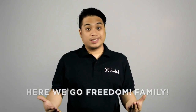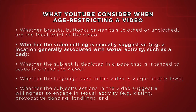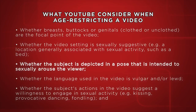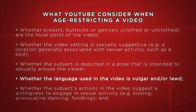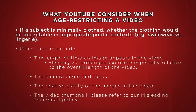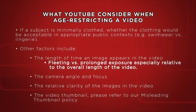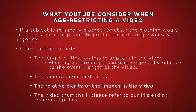These are the things that YouTube considers when a video should be age restricted. Whether breasts, buttocks, or genitals, clothed or unclothed, are the focal point of the video. Whether the video setting is sexually suggestive — for example, a location generally associated with sexual activities such as a bed. Whether the subject is depicted in a pose intended to sexually arouse the viewer. When the language used in a video is vulgar or lewd. Whether the subject's actions suggest a willingness to engage in sexual activity — for example, kissing, provocation, dancing, or fondling. If a subject is minimally clothed, whether the clothing would be acceptable in appropriate public contexts, such as swimwear versus lingerie. Other factors include the length of time an image appears — fleeting versus prolonged exposure — especially relative to the overall length of the video, the camera angle and focus, the relative clarity of the image, and the video thumbnail.